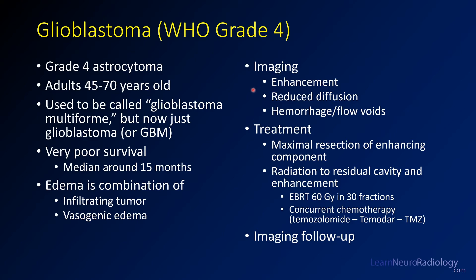These are characterized by a centrally enhancing lesion. They tend to have reduced diffusion in areas that are cellular, although not as bright as an abscess. You can see areas of hemorrhage and flow voids. Treatment is maximal resection of the enhancing component, then radiation — typically 60 Gray to the tumor bed in 30 fractions, given concurrent with temozolomide. Imaging follow-up is done about every three months.